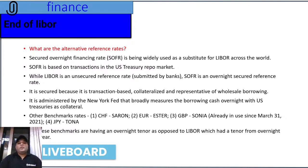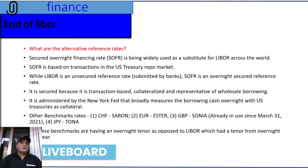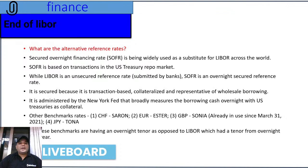The key difference between LIBOR and SOFR is that SOFR is an overnight secured reference rate backed by the US Treasury repo market, whereas LIBOR was essentially an unsecured reference rate not backed by any asset. A US Treasury bill, at the end of the day, is an asset — so SOFR is secured because it is transaction-based and collateralized. Collateral secures a loan, similar to using property as collateral for an education loan. SOFR is administered by the New York Federal Agency and broadly measures borrowing cash overnight with US Treasuries as collateral.